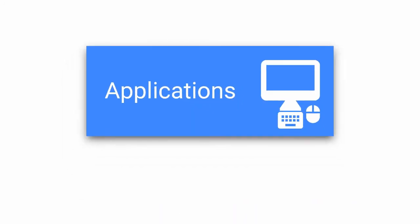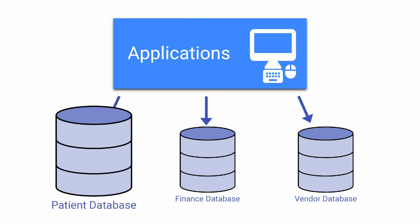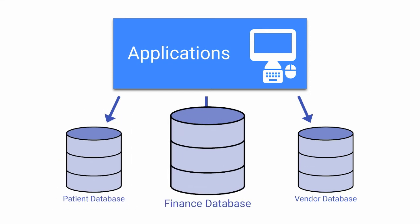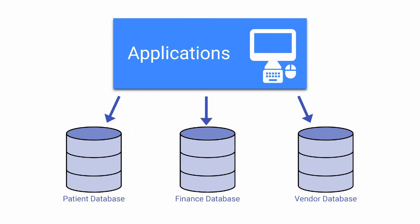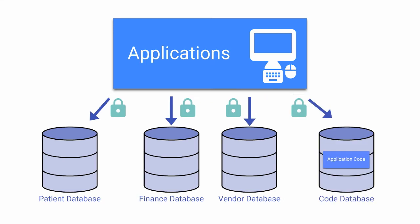Cache stores data in physical files called databases. Applications typically use multiple databases for grouping—for example, keeping patient demographics separate from finances—or for security purposes, such as granting access privileges or encrypting sensitive data. Cache also stores application code in databases, either together with or separate from the data.